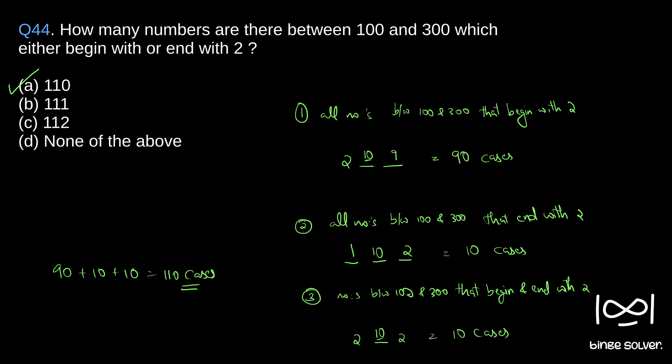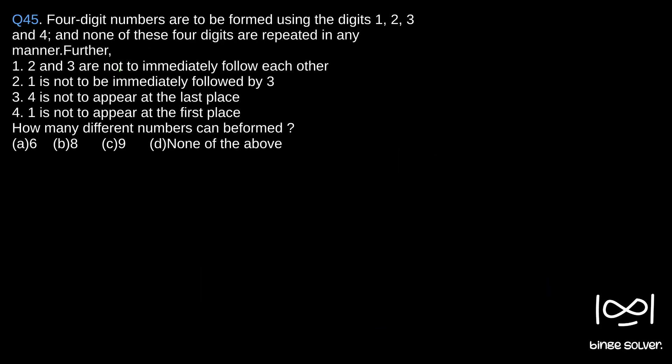Question 45: Four-digit numbers are to be formed using the digits 1, 2, 3, and 4, and none of these four digits are repeated in any manner. Further, four conditions are given. The question is how many different numbers can be formed, so there are four conditions which narrow down our possible combinations.